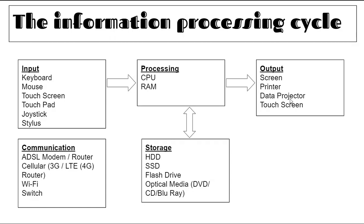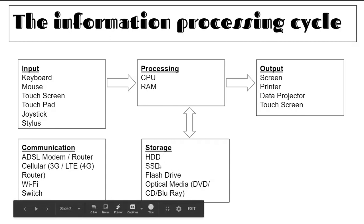The printer or data projector would be projecting what I'm typing onto the screen or on the touch screen. Output is what you're actually going to be seeing, what you hear — your speakers, that kind of thing. Storage: I can save my document with different options, or instead of saving to my hard drive, I could send an email using communication media.